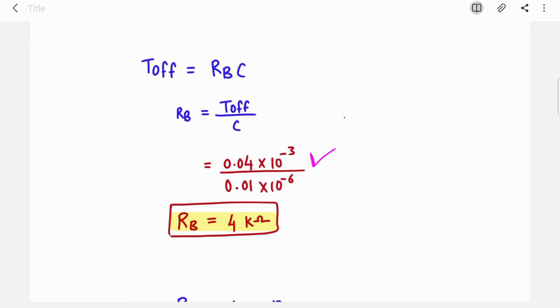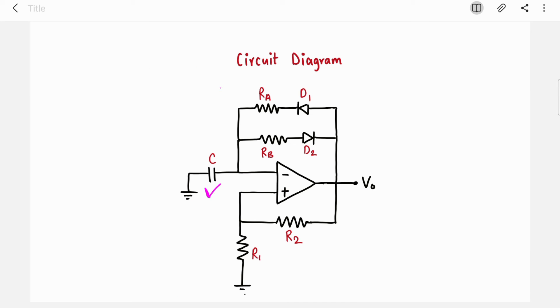Similarly, we will find out value of RB. T_off is RB into C. T_off is 0.04 millisecond which we found out and C is 0.01 microfarad. So RB will come out as 4 kilo-ohms. We got values of RA and RB.